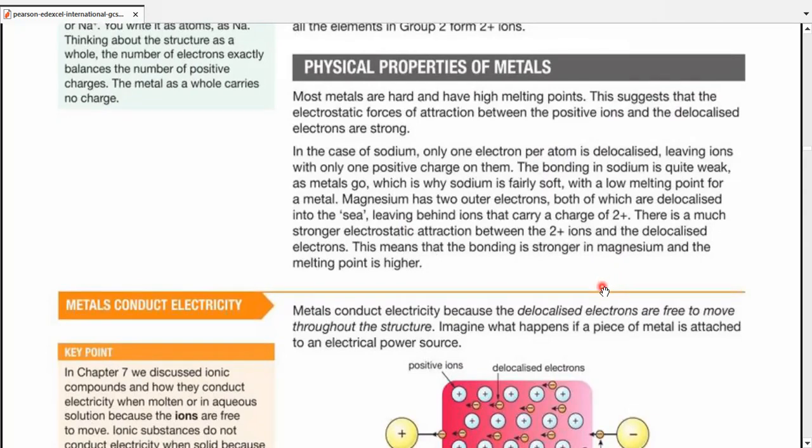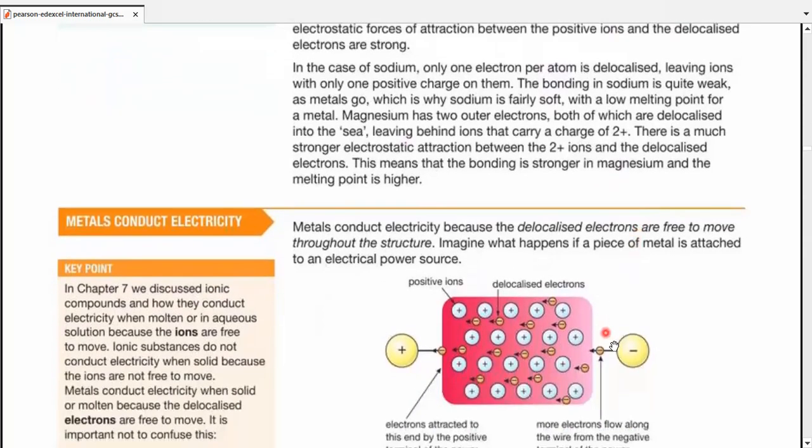There is much stronger electrostatic attraction between positive 2 ions and the delocalized electrons. This means the bonding is stronger in magnesium, and the melting point is higher.